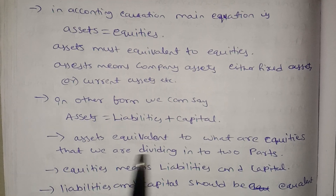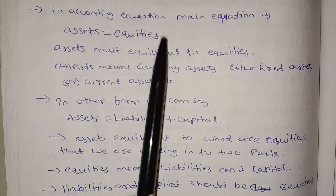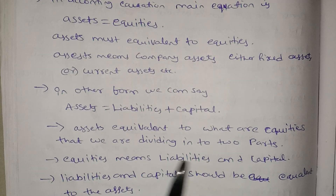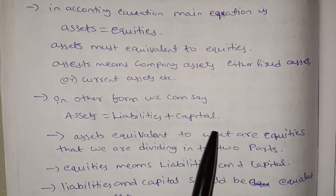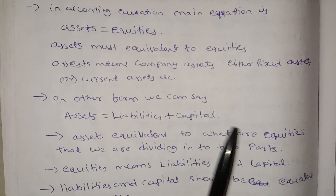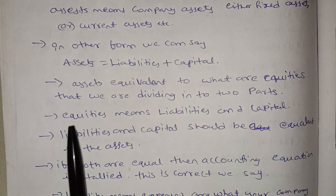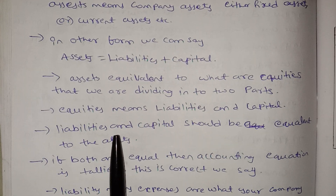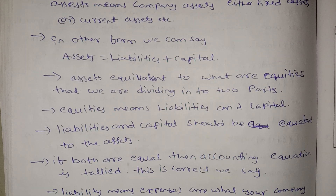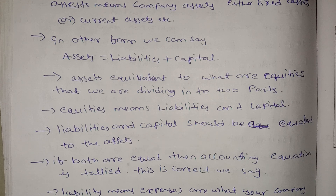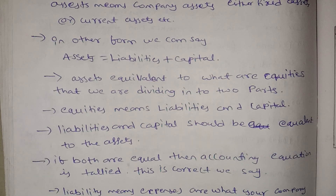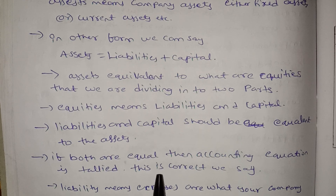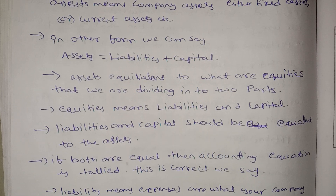Equities is divided into two parts: Liabilities and Capital. So Assets equals Liabilities plus Capital. If both sides are equal, then the accounting equation is tallied — this is correct.